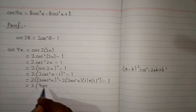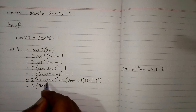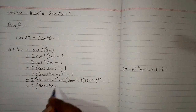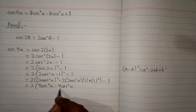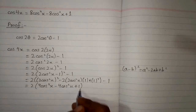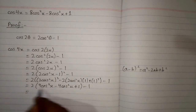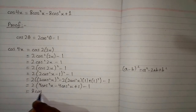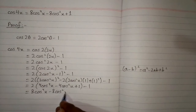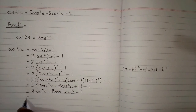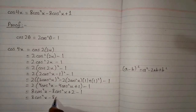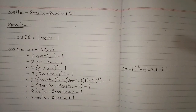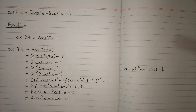Expanding: (2)² = 4 and cos²x squared gives cos⁴x, so we get 4cos⁴x − 4cos²x + 1 − 1. Multiplying through, this becomes 8cos⁴x − 8cos²x + 2 − 1, which simplifies to 8cos⁴x − 8cos²x + 1. This is the required identity: cos(4x) = 8cos⁴x − 8cos²x + 1.